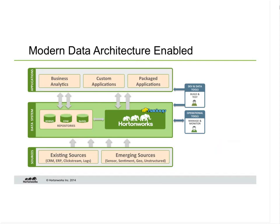Our diagram is now modified to include Apache Hadoop. Importantly, Hadoop sits alongside existing technologies — it complements them. It allows organizations to collect new and emerging data sources, land them first, and then begin to process them, while still accessing them with the same tools and technologies they already have. That's what we mean by a modern data architecture — Hadoop is a complementary component.